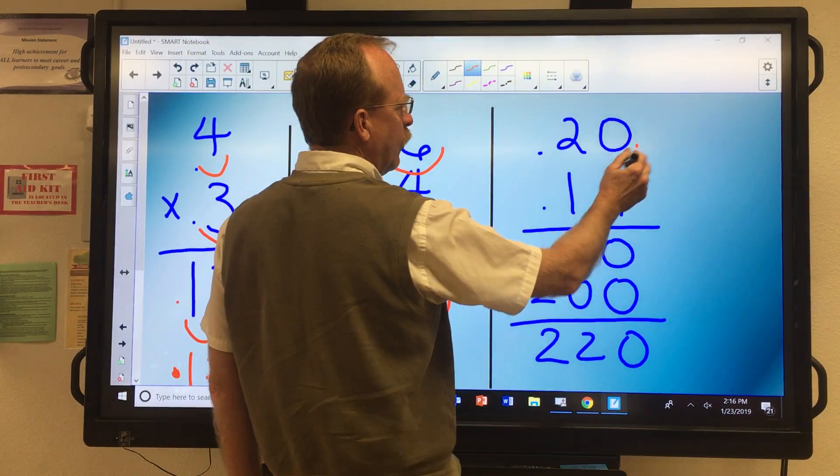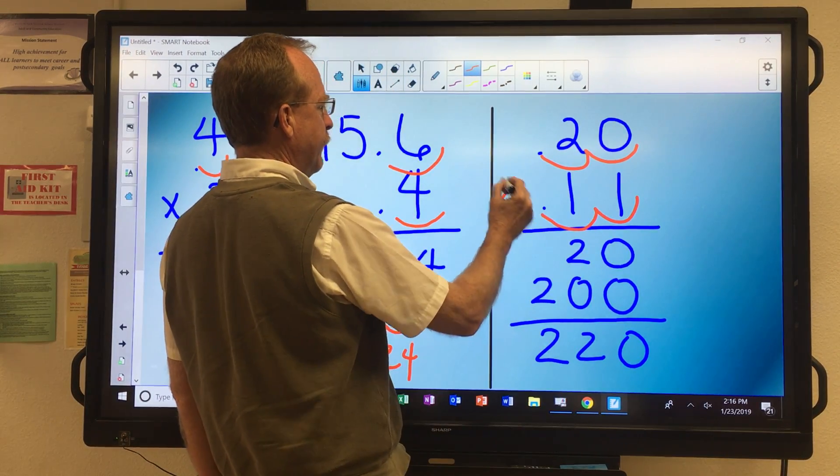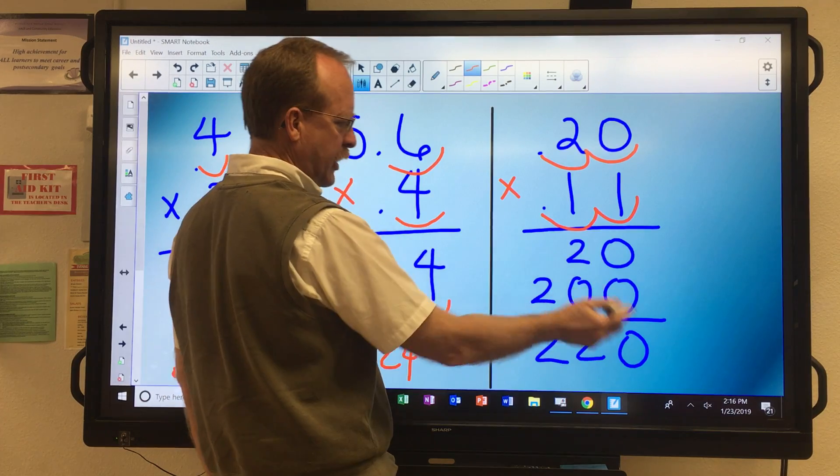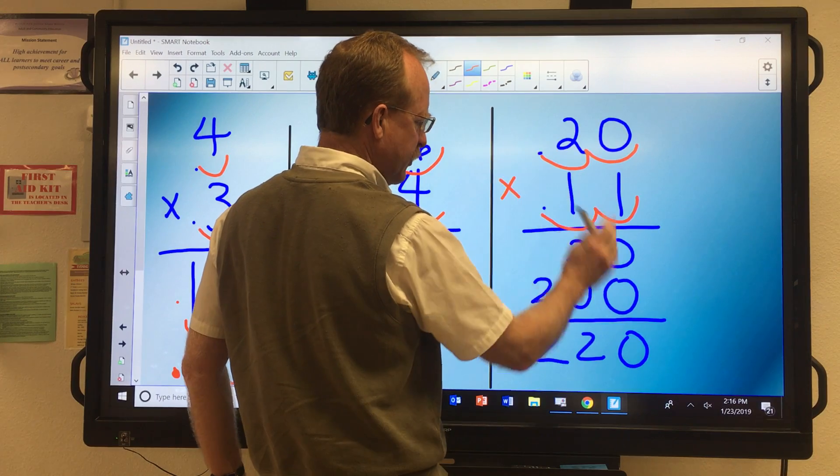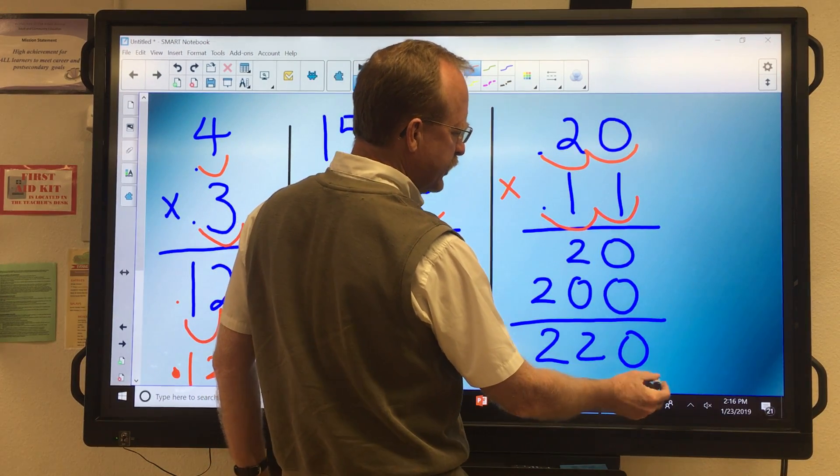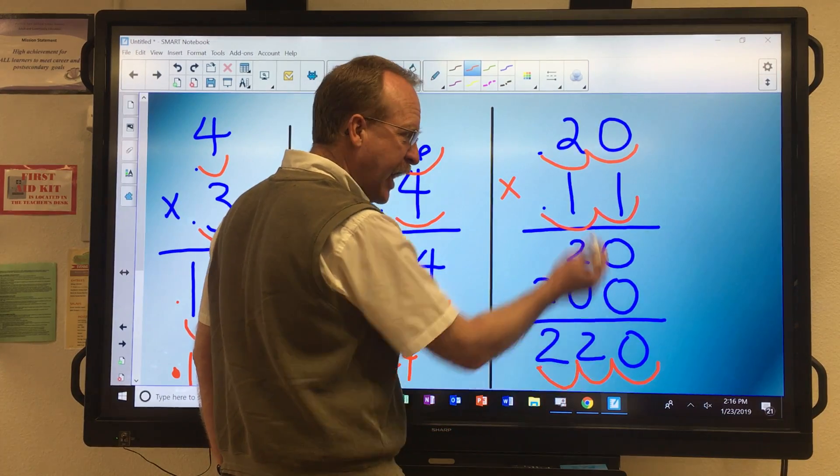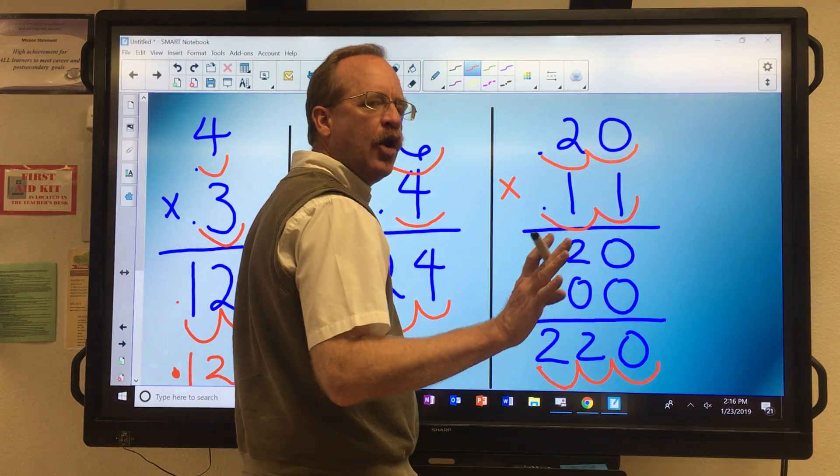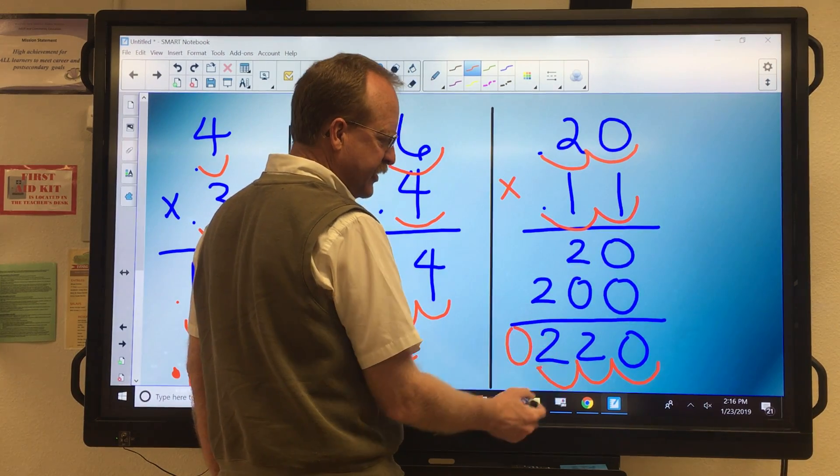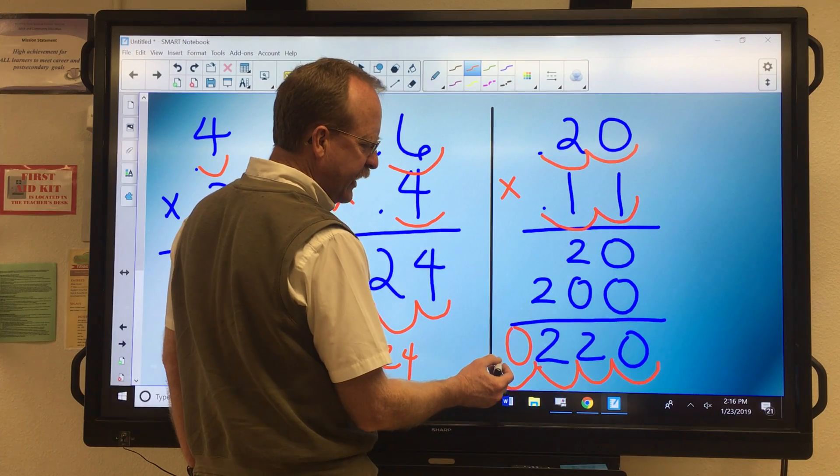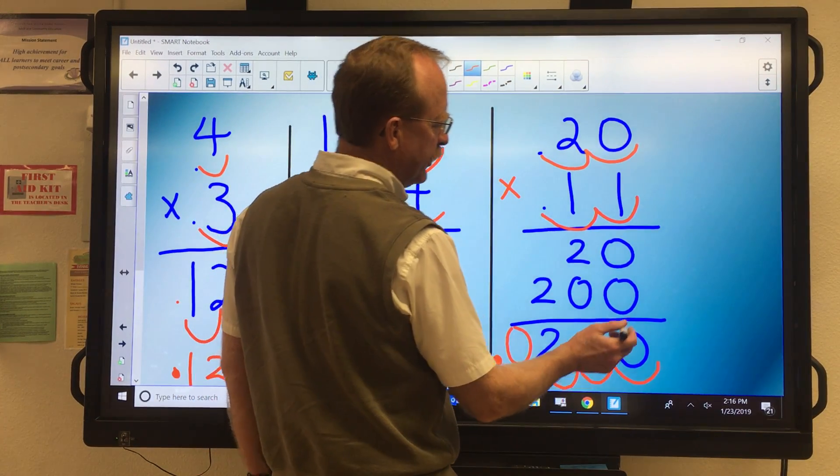Here, this is an interesting one, 1, 2, 3, 4. Now, when I do my multiplication, without looking at the decimals, I come up with 220. And when I start counting, I have 1, 2, 3, but I have 4 spots, no problem. Just put a 0 in front of the last number, and bring it over. My final answer, .0220.